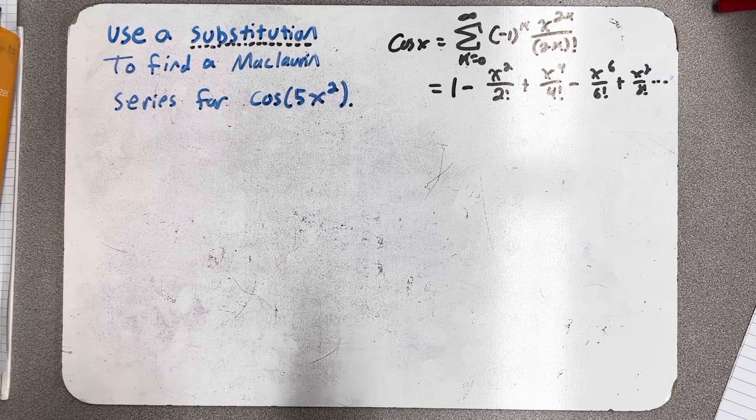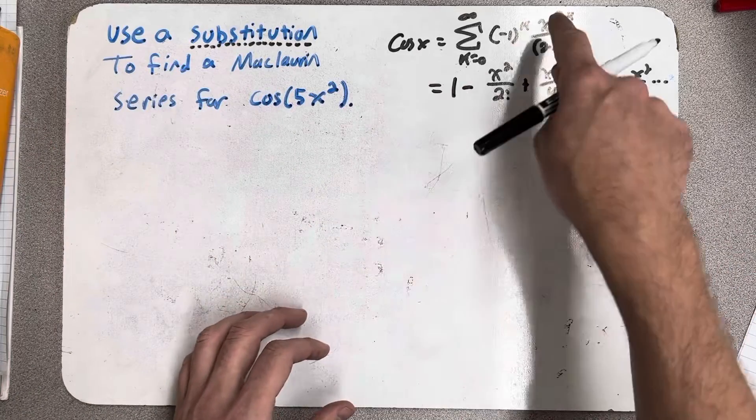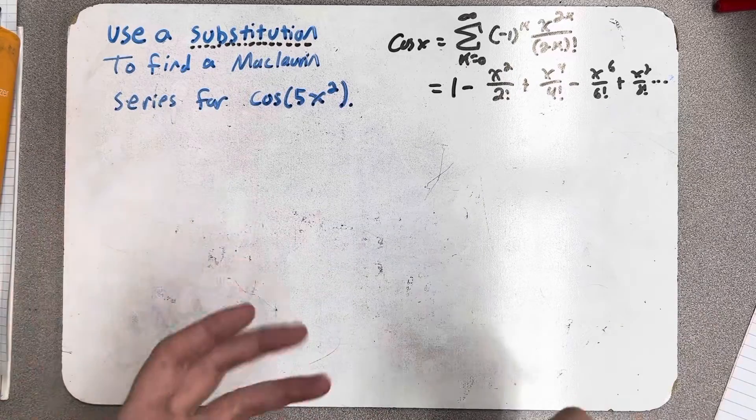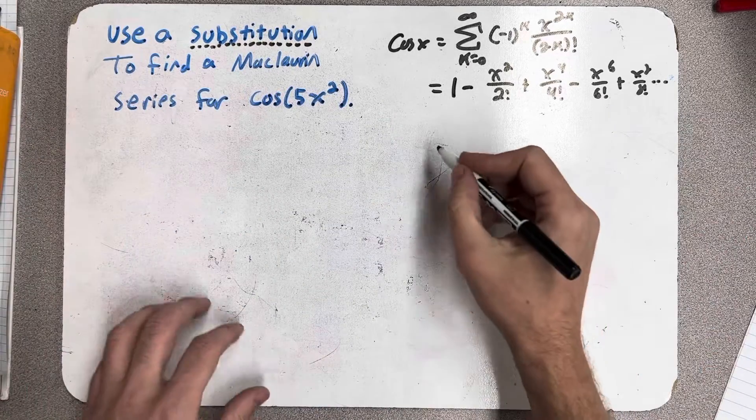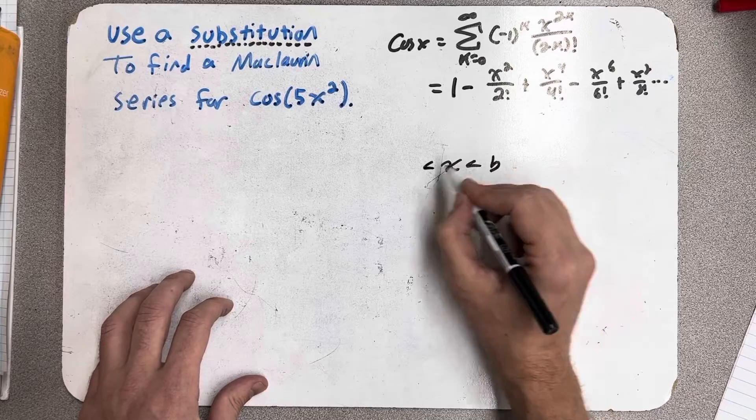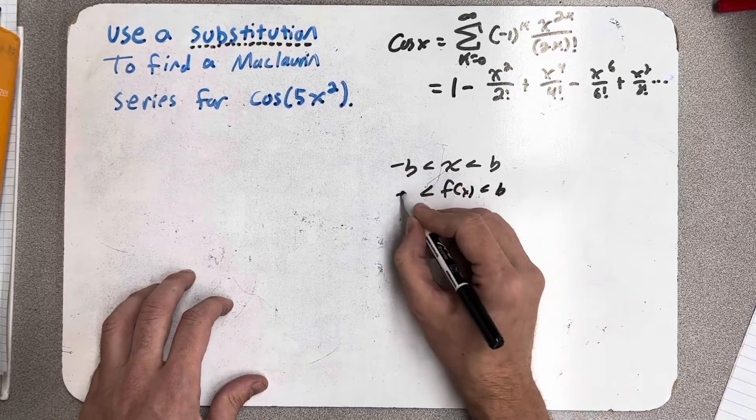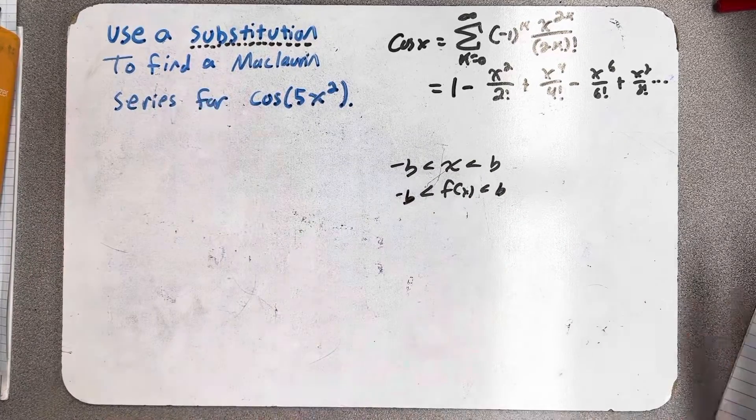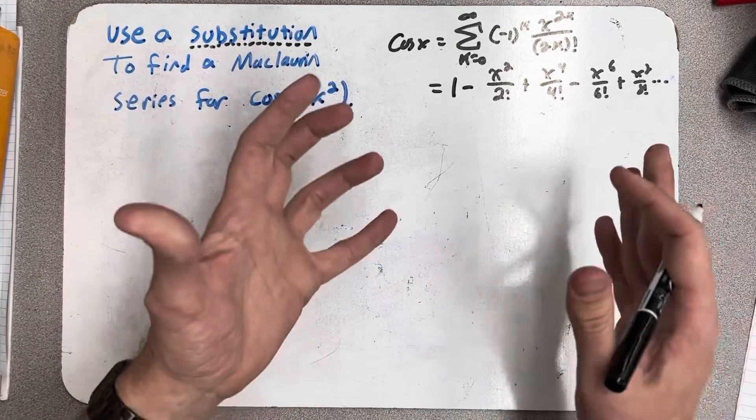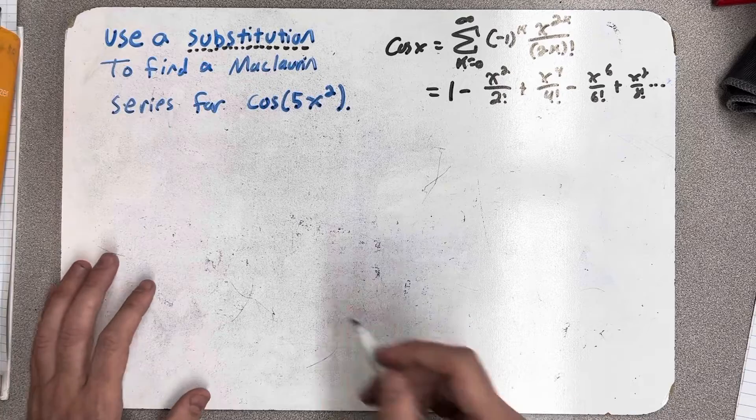Way back when we were just talking about power series, we had a theorem that said if we took a power series, which this Maclaurin series is, and replaced x on both sides with a continuous function, we still had a power series that still converged in the same places, and I say air quotes on that, because if we had a power series that converged between, say, b and minus b, and we replaced with a continuous function, then we replace x with that continuous function, and our power series still converges on that interval if we get x by itself. Well, one of the nice things here is cosine converges absolutely for all real numbers, so when we replace x with 5x squared, our new series will also converge absolutely for all real numbers.